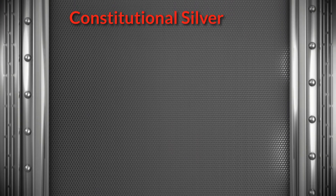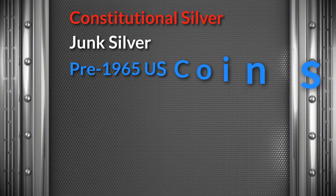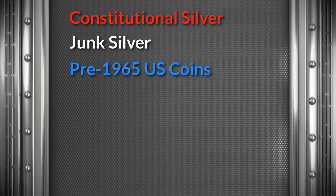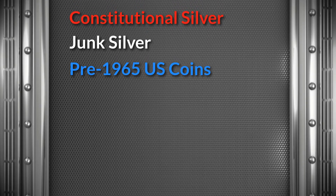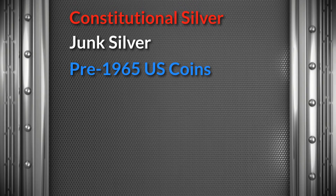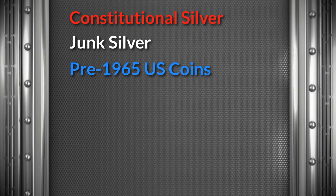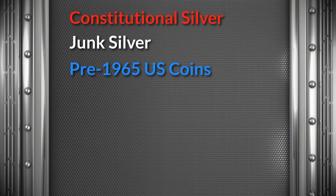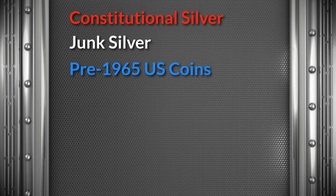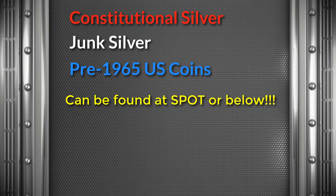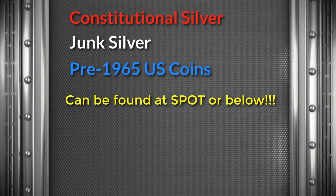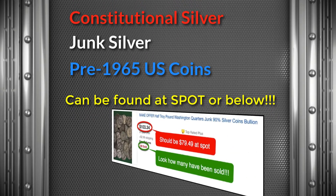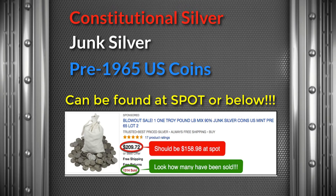If you're buying constitutional silver, my recommendation is to be patient. Do not overspend because you get excited and want what is being sold. With 0.999 pure silver bullion, it's very difficult to find it for spot or below. However, with constitutional silver, you can find it at or even below spot many times — you have to be patient and do your research, but it's out there. On eBay, constitutional silver is almost always overpriced. Frankly, you can get it from most online bullion dealers for cheaper than eBay.